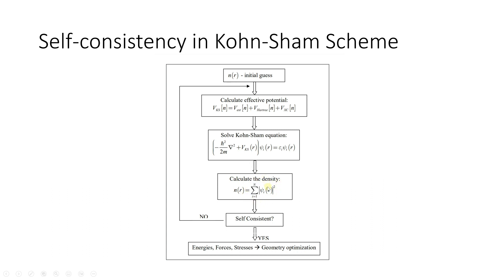If this calculated electron density equals the initial guess, then you have self-consistency. If the calculated electron density is not equal to the initial guess, you must guess another electron density and repeat all of these steps again and again until the initial electron density becomes equal to the density calculated at the end of the cycle.